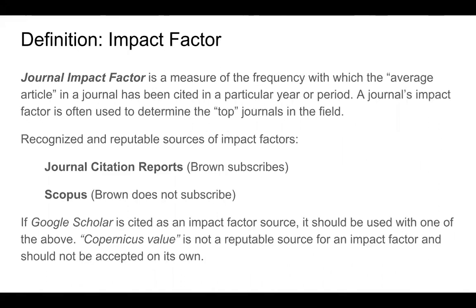Here are a few definitions of terms often used when evaluating journals. The journal impact factor is a measure of the frequency with which the average article in a journal has been cited in a particular year or period, and is often used to determine the top journals in a field. Recognized and reputable sources of impact factors are Journal Citation Reports, which Brown subscribes to, and Scopus, which Brown does not subscribe to. If Google Scholar is cited as an impact factor source, it should be used with one of the above. Copernicus value is not a reputable source for an impact factor and should not be accepted on its own. Please remember that journals in different fields may have very different impact factors — for example, the top journal in oncology may have a very different impact factor than the top journal in a subspecialty like child psychology.